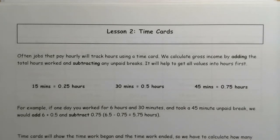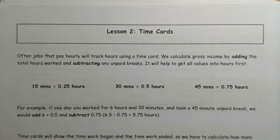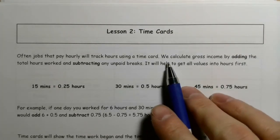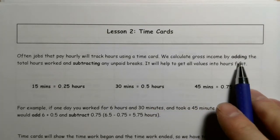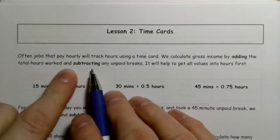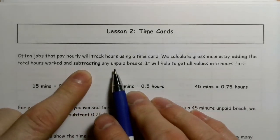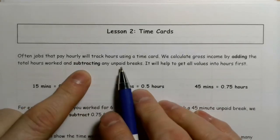I once worked at a job and I remember very clearly having to take my little card, and as I walked into the building, I had to put it in my own little slot there. And at the end of the day, I would pull it out. So we calculate gross income by adding the total hours worked and subtracting any unpaid breaks.